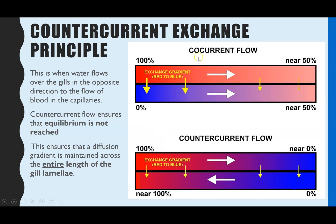To illustrate, let's first look at con-current flow, where blood and water flow in the same direction. Water enters the gills at 100% oxygen saturation and blood enters at 0%. This causes rapid diffusion initially, but eventually equilibrium is reached at 50-50%, and diffusion no longer occurs across the entire length of the gill lamellae. Counter-current flow, which is what actually happens in fish, avoids this problem.